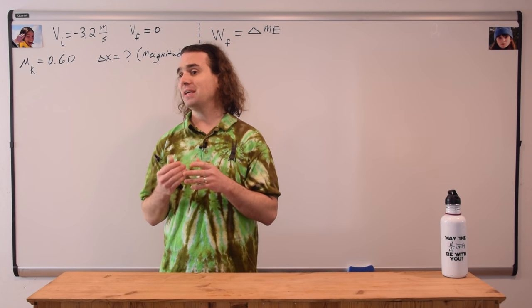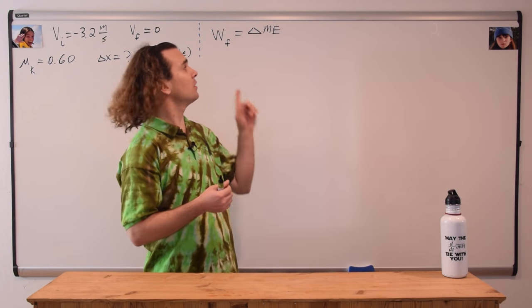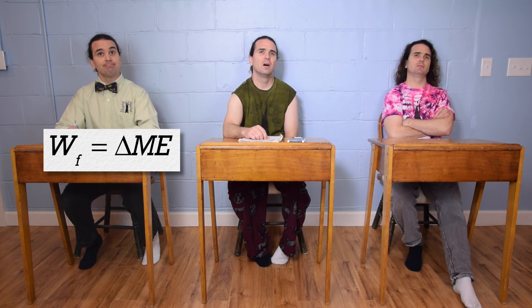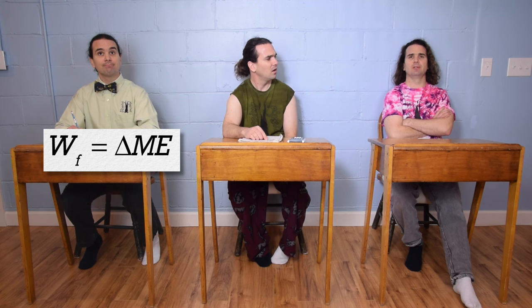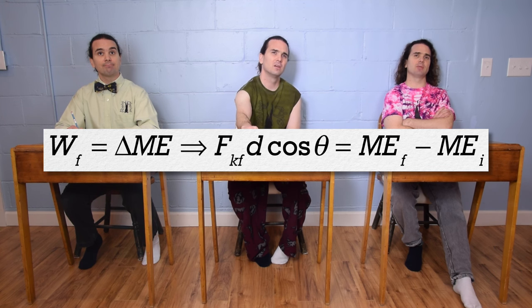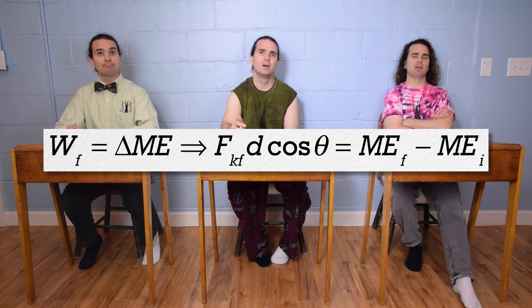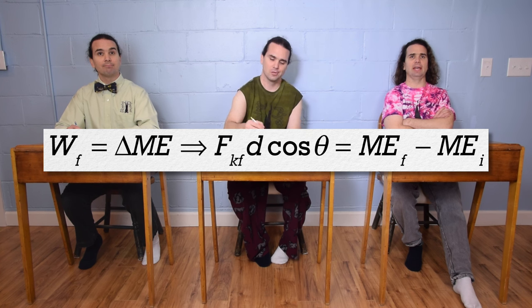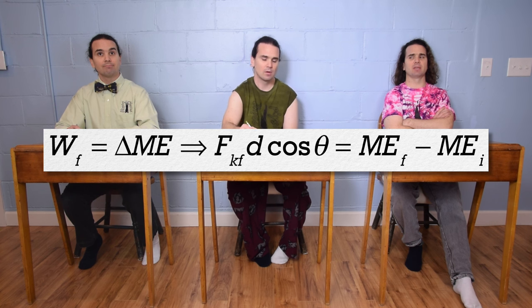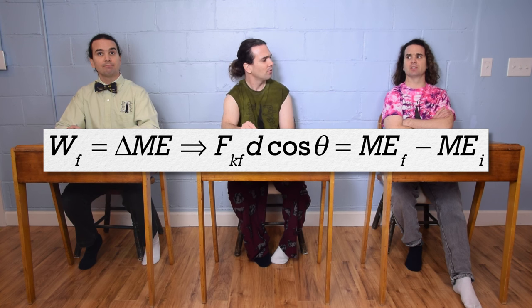Bo, could you please expand the work due to friction equation? Work due to friction equals force of kinetic friction times displacement times cosine theta, and the change in mechanical energy equals mechanical energy final minus mechanical energy initial.